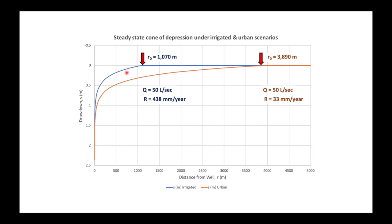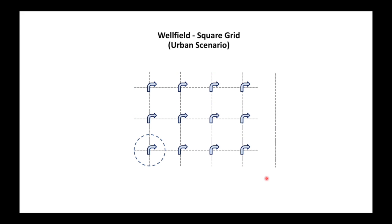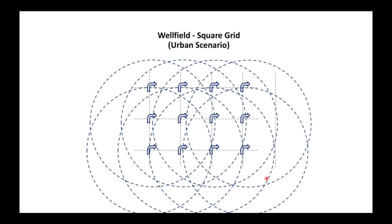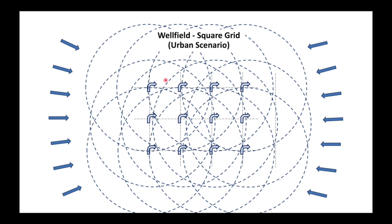What's really important to understand is that the radius of influence has increased, so the original well field design is no longer appropriate. Under the original design, all wells pump at equilibrium with stable water levels. But after urbanization, each well's radius of influence expands from one to four kilometers. With multiple wells in a field, their areas of influence completely overlap, drawing down water levels across the whole aquifer and requiring groundwater to flow in from all sides — potentially causing serious aquifer over-exploitation.